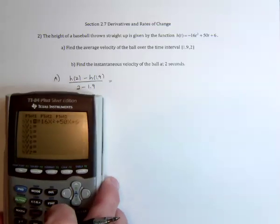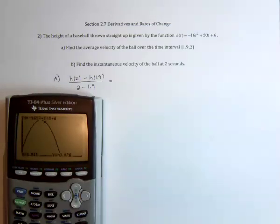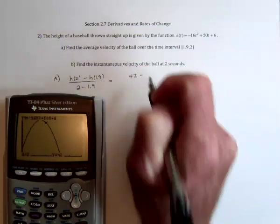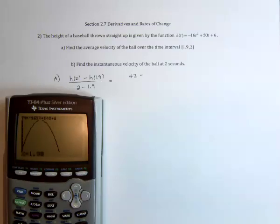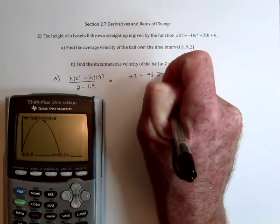So here's the function. If I go to the graph and substitute in a 2, it's going to say that it was at a height of 42 feet. Substitute a 1.9, and that's 43.24.